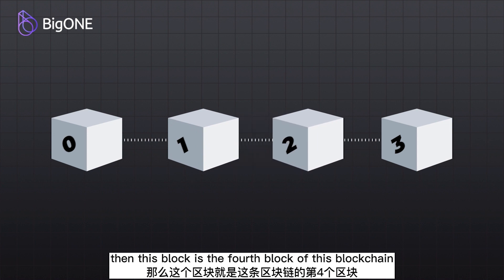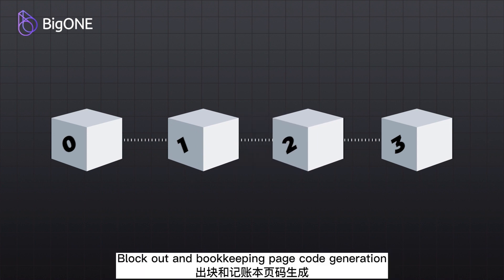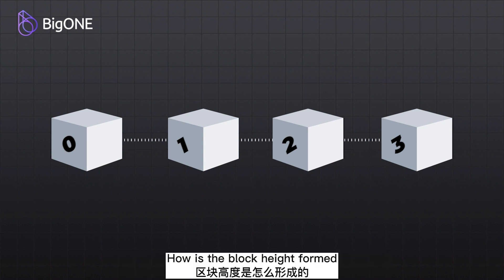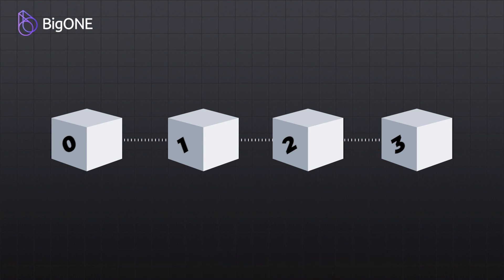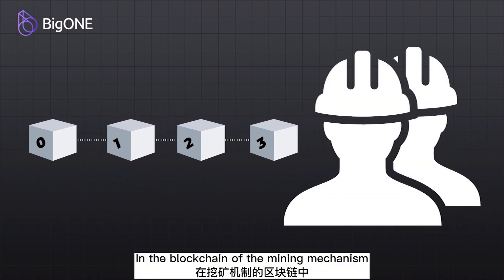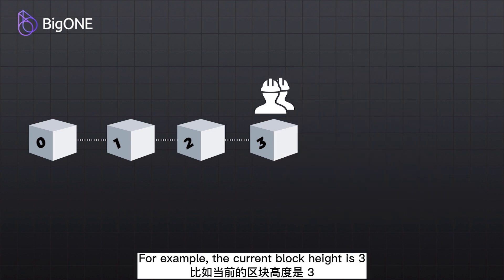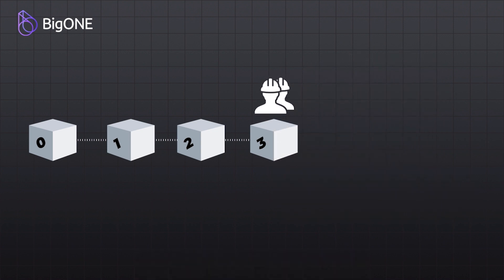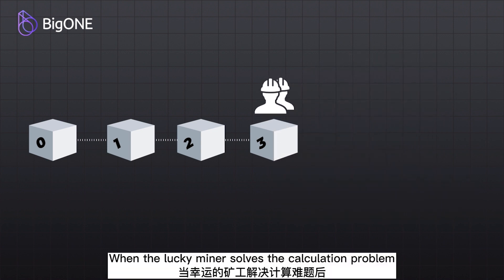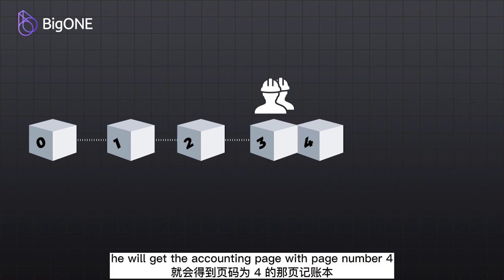If the current accounting page code is three, then this block is the fourth block of this blockchain. How is the block height formed? In the blockchain of the mining mechanism, the page number of the blockchain is obtained by competition among miners. For example, the current block height is three. When the lucky miner solves the calculation problem, he will get the accounting page with page number four.